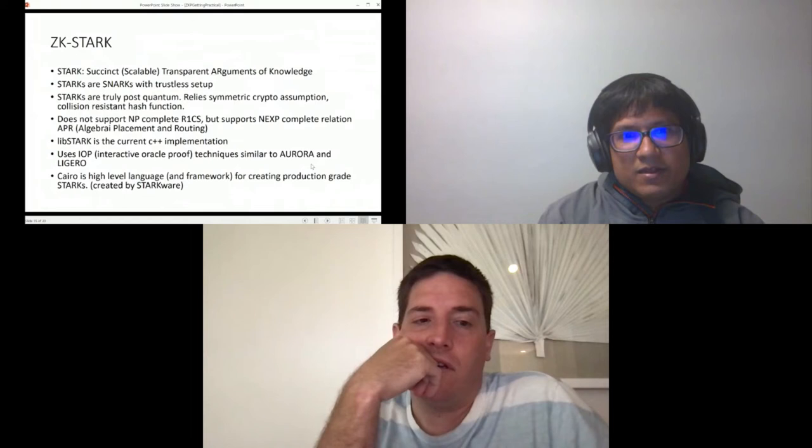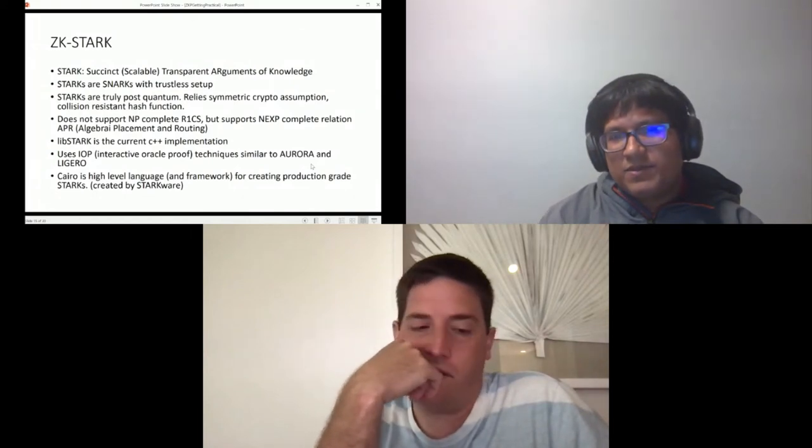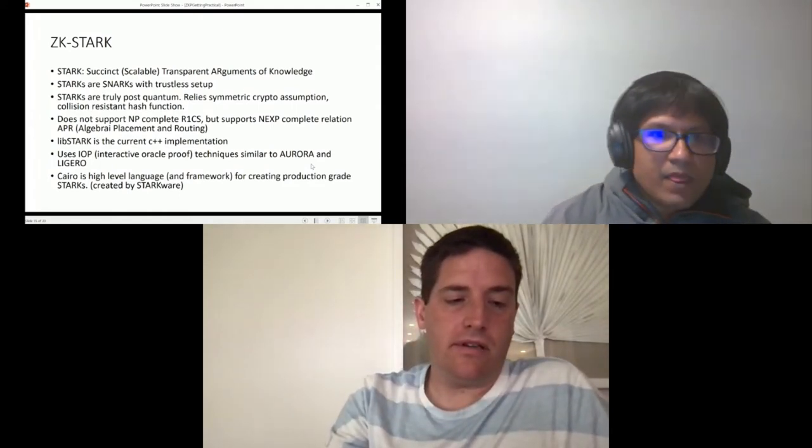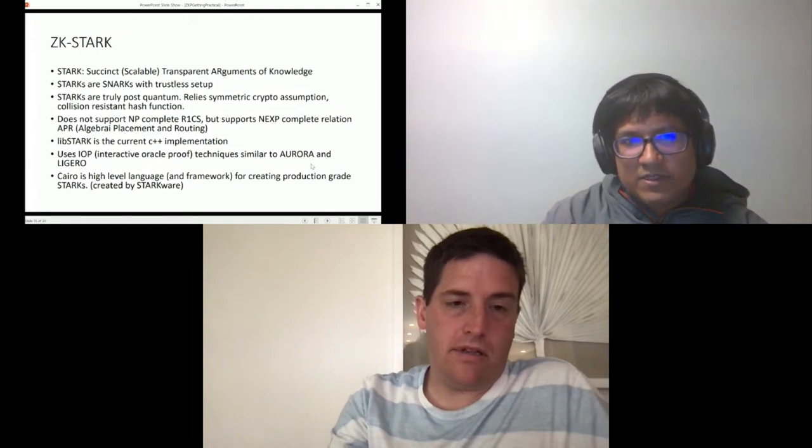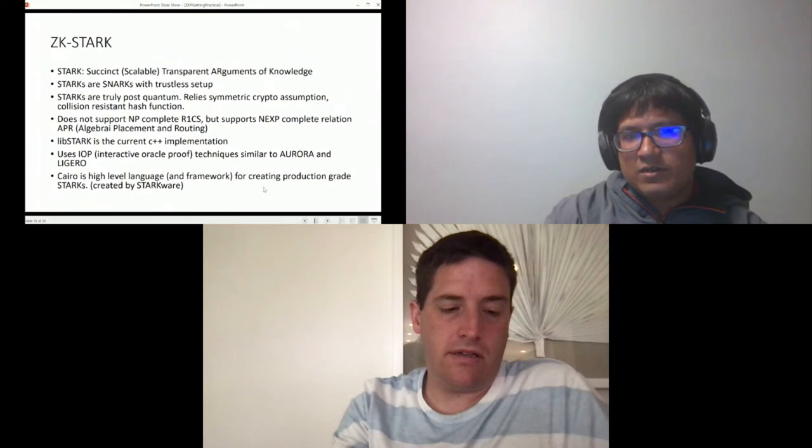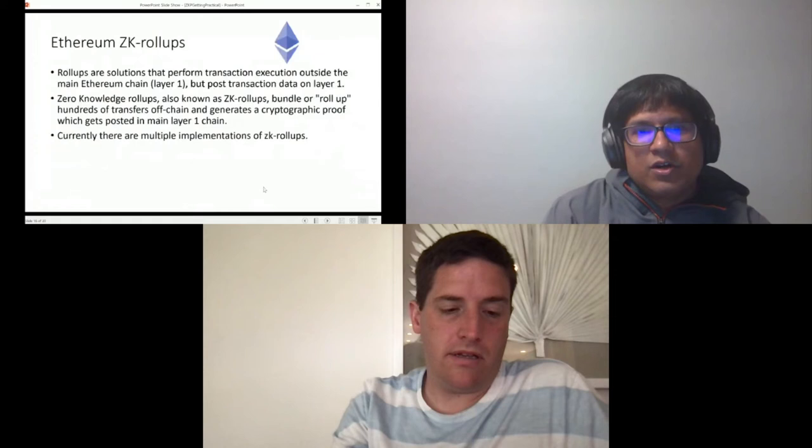You also have zk-STARKs and they are SNARKs which have complete untrusted setup, similar to Bulletproofs. It has libSTARK as a C++ implementation and there is also a language called Cairo for that which produces production-grade zk-STARKs. They are important because they are getting used in Ethereum zk-rollups.